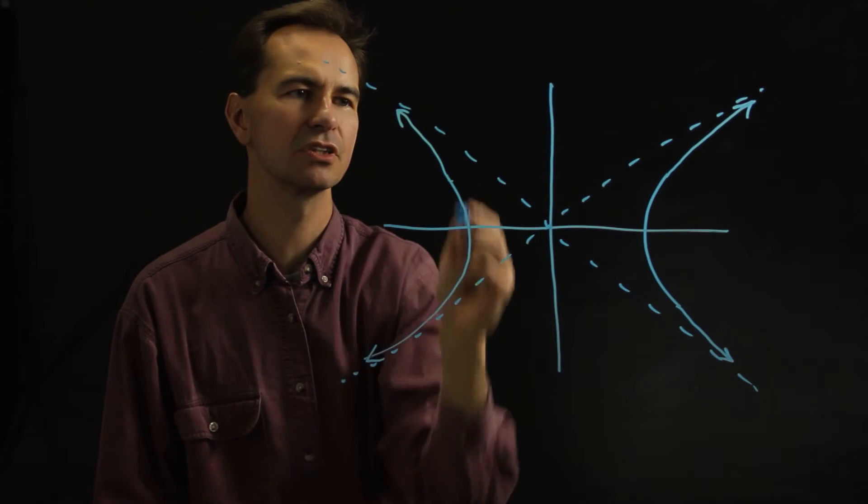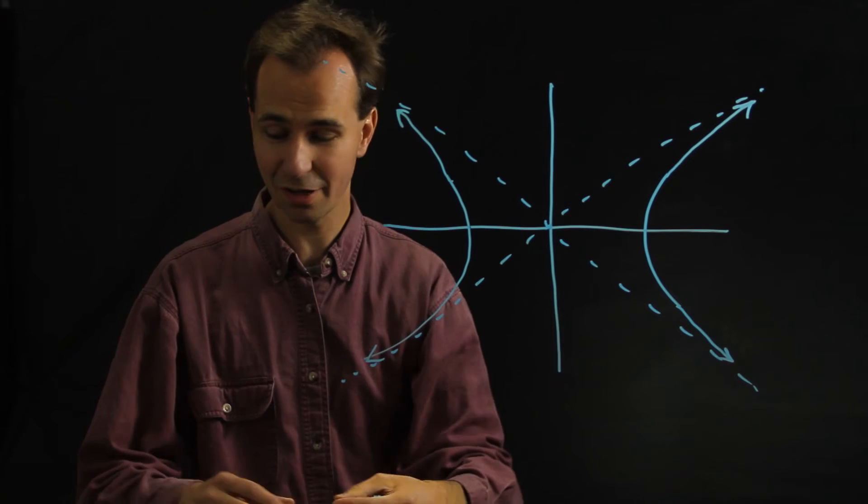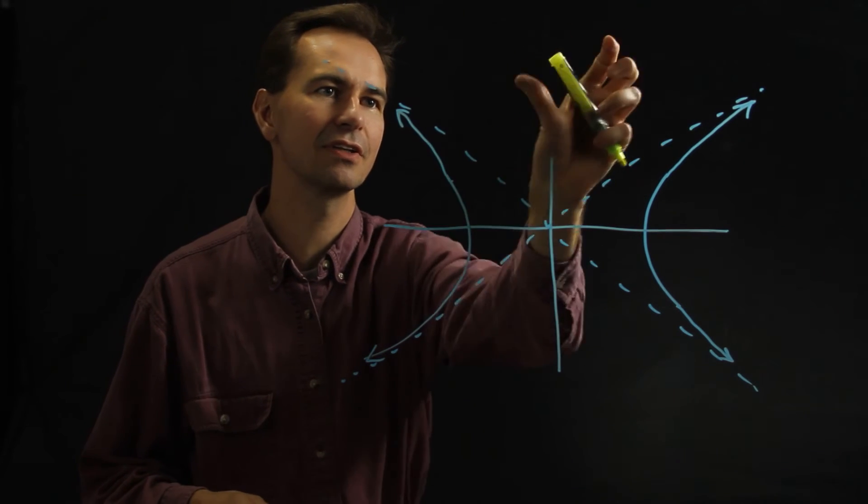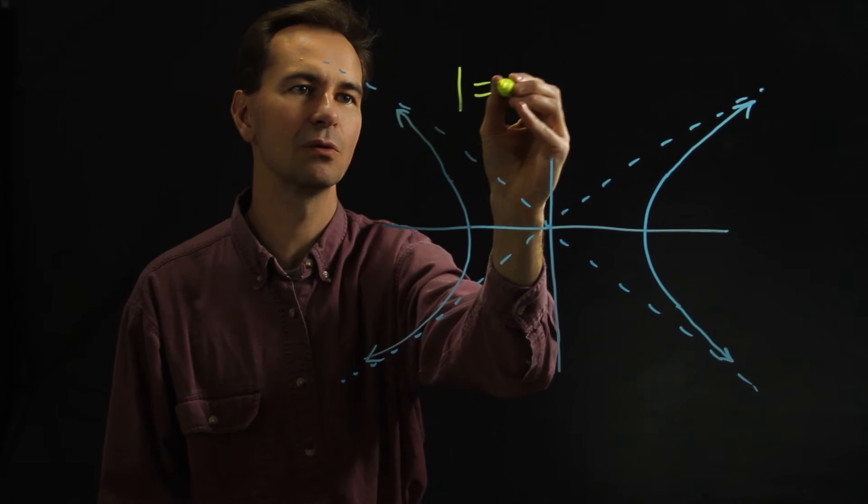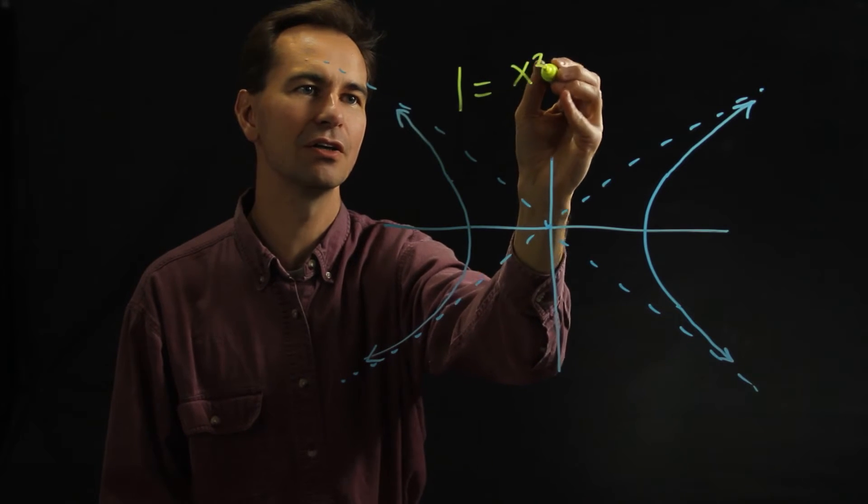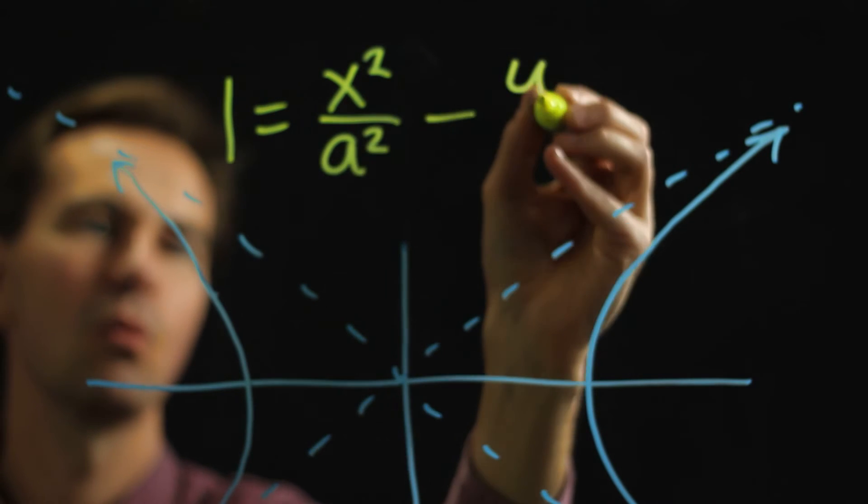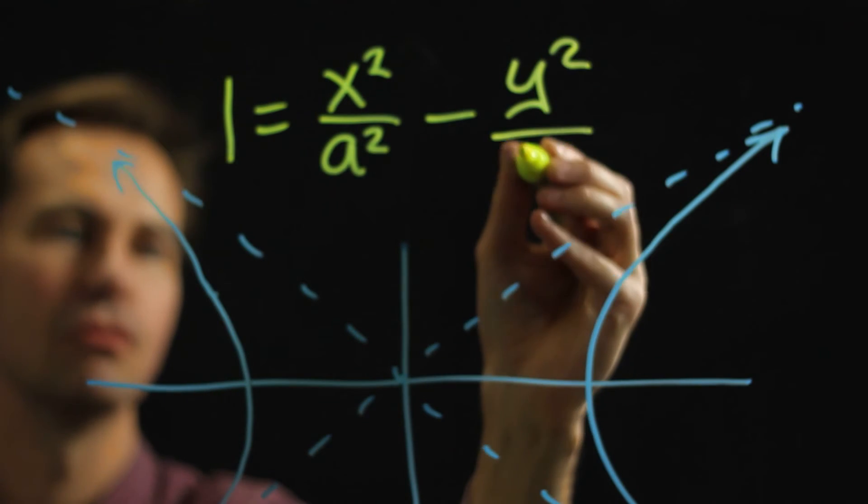So there's what a hyperbola looks like and the equation for a hyperbola is actually something like this. It's 1 equals x squared over a squared minus y squared over b squared.